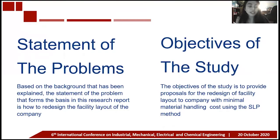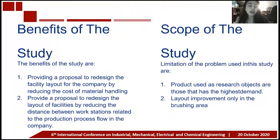In this paper, the statement of the problem based on the background explained is: how to redesign the facility layout of the company? The objective of the study is to provide proposals for the redesigned facility layout of the company with minimal material handling costs using SLP, or systematic layout planning method. There are two benefits: first, providing a proposal to redesign the facility layout by reducing the cost of material handling; and second, providing a proposal to reduce the distance between workstations related to the production process flow.